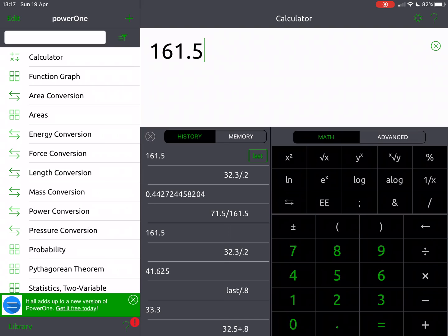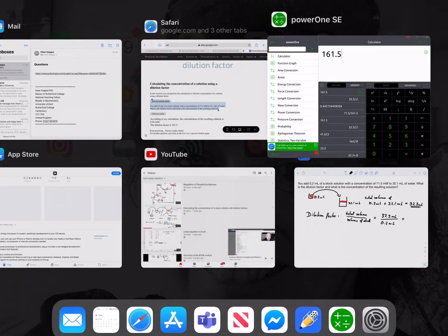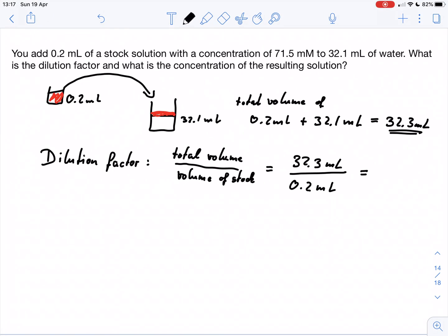That is our dilution factor: 161.5. So our stock solution is 161.5 times diluted. So what can we do with that?